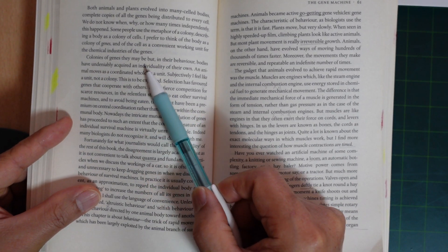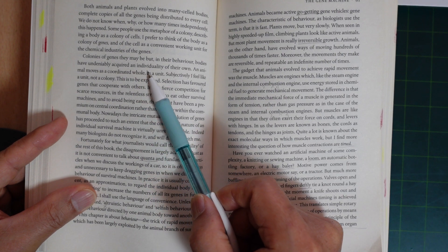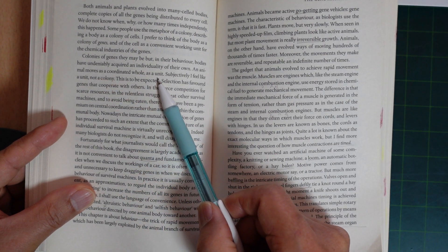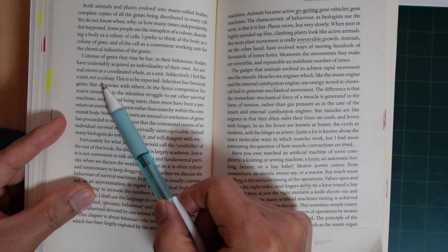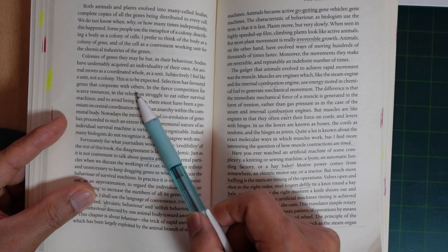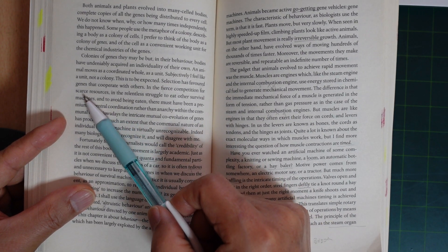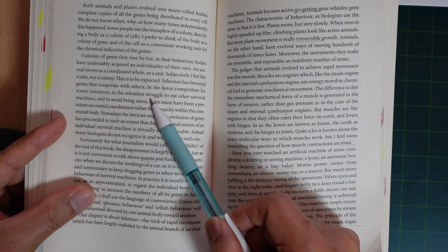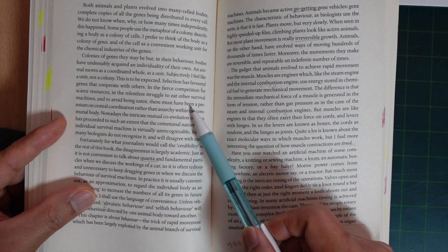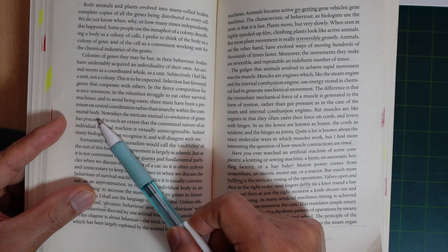Colonies of genes they may be, but in their behavior, bodies have undeniably acquired an individuality of their own. An animal moves as a coordinated whole, as a unit. Subjectively I feel like a unit, not a colony. This is to be expected. Selection has favored genes that cooperate with others. In the fierce competition for scarce resources, in the relentless struggle to eat other survival machines and to avoid being eaten, there must have been a premium on central coordination rather than anarchy within the communal body.